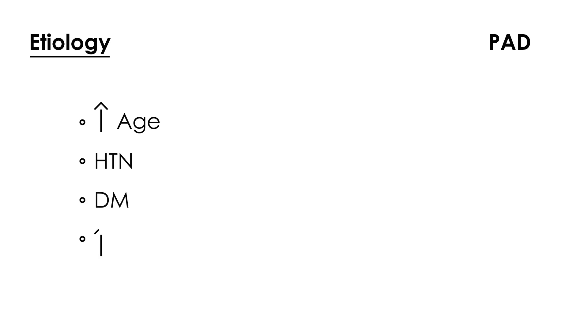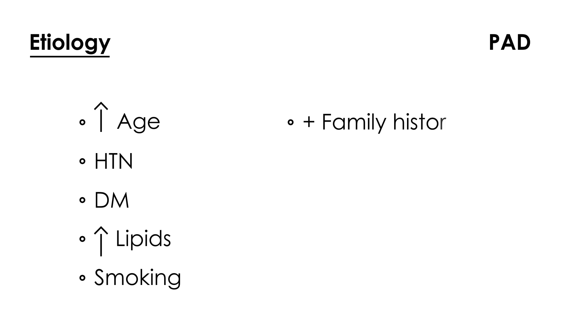The etiology of peripheral arterial disease is essentially the same as for coronary artery disease. Those risk factors include increased age, high blood pressure, diabetes, high cholesterol levels, smoking, positive family history, and obesity. The same reasons why somebody would have coronary artery disease are the same reasons why someone would have peripheral arterial disease.